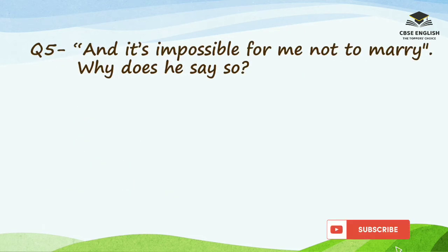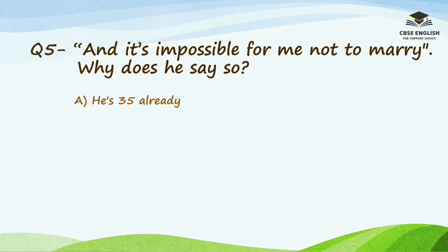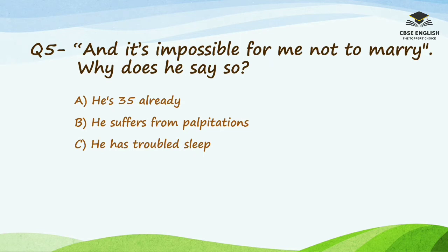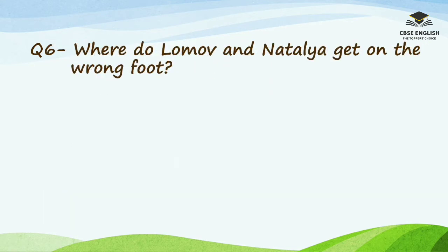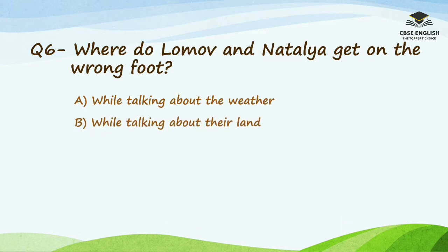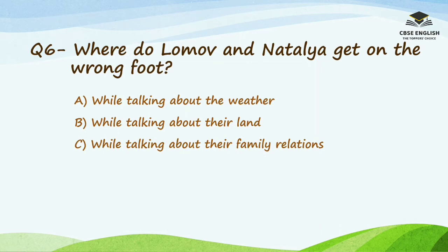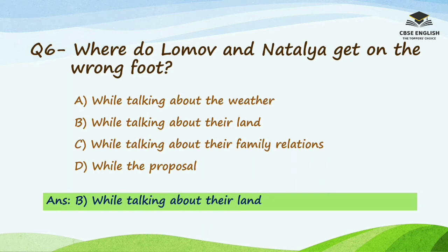Question number 5: 'It's impossible for me not to marry' — why does he say so? Options are he is 35 already, he suffers from palpitations, he has trouble sleeping, or all of the above. The right option is all of the above. Question number 6: Where do Lomo and Natalia get on the wrong foot? Options are while talking about the weather, their land, their family relations, or while the proposal. The right answer is while talking about their land.